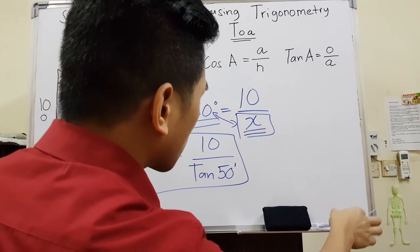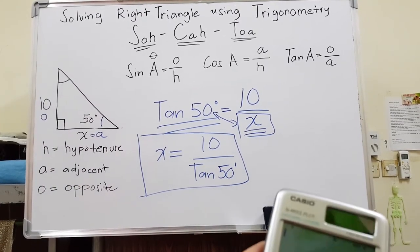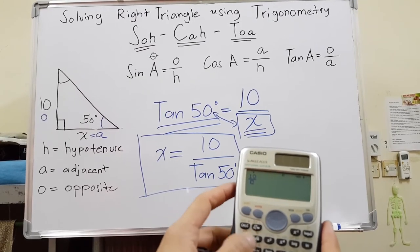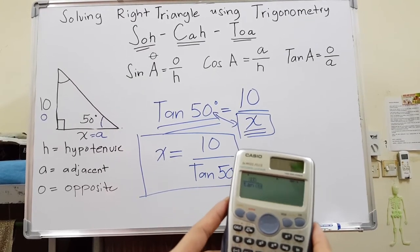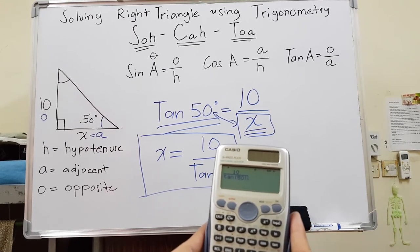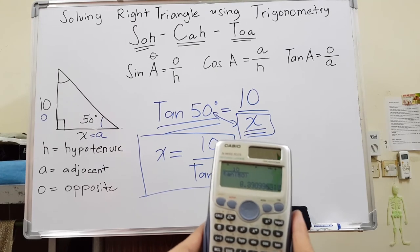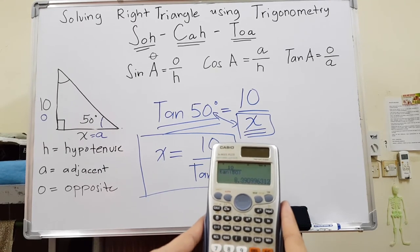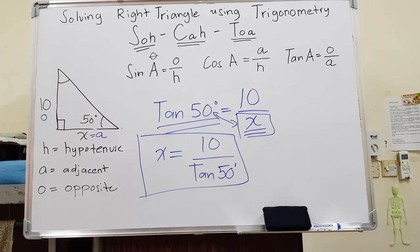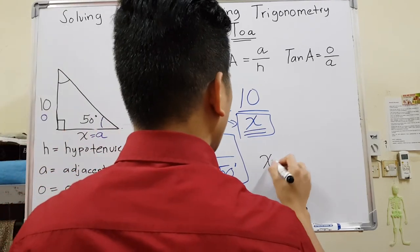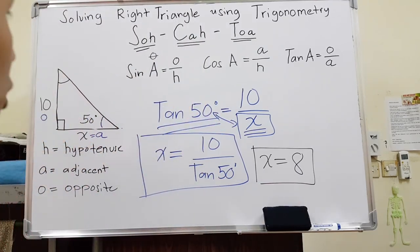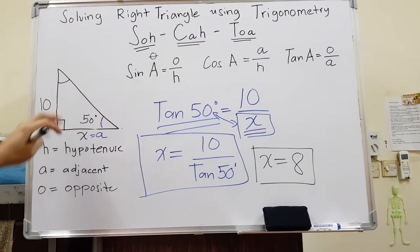Enter 10 over tangent(50) into the calculator. Make sure you close the bracket to avoid a syntax error. You may use your GDC here. The answer is approximately 8.39, or about 8 to the whole number. Therefore X equals 8. And that's how you do trigonometry on a right triangle.